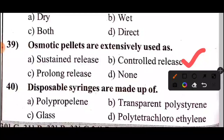Question 40: Disposable syringes are made up of what material? The answer: Option B — disposable syringes are made up of transparent polystyrene.